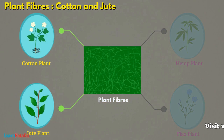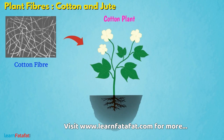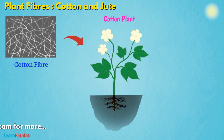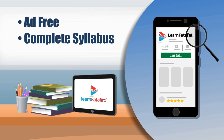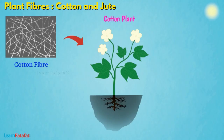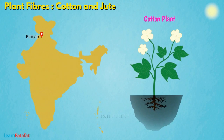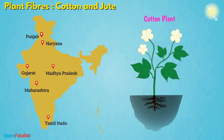Cotton fibers are obtained from cotton plants. Cotton plants are grown in fields having black soil and need a warm climate for growth. They are grown in Punjab, Haryana, Gujarat, Madhya Pradesh, Maharashtra, Tamil Nadu and Andhra Pradesh states of India.